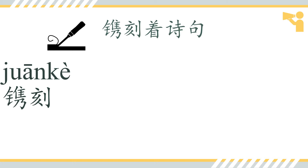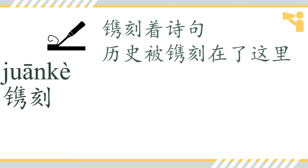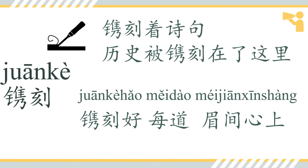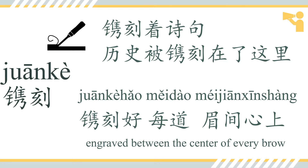镌刻者诗句 — 诗句 means 'poem.' It can also be used to mean 'to memorize.' 历史被镌刻在了这里。 And here we have: 镌刻好美到每一间心上. 眉 means 'eyebrow,' and 到 is a measure word for it. So: 镌刻好，美到，每一间心上.